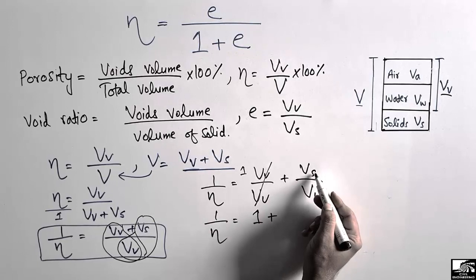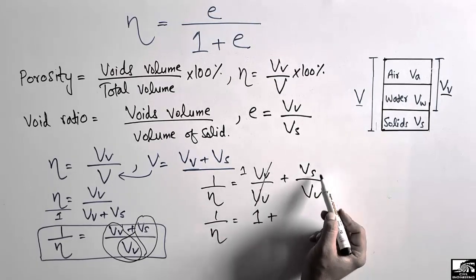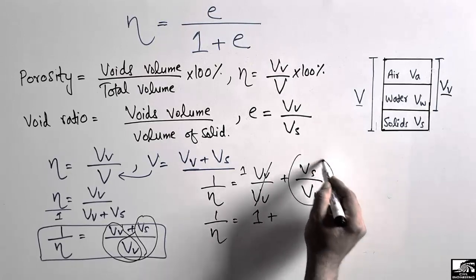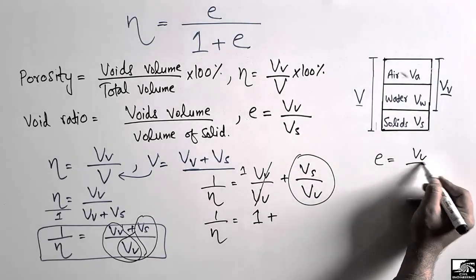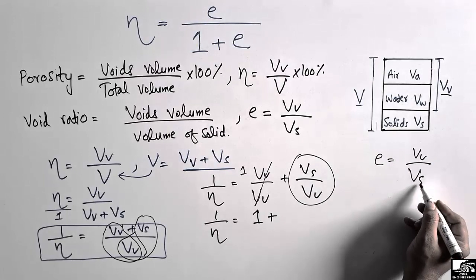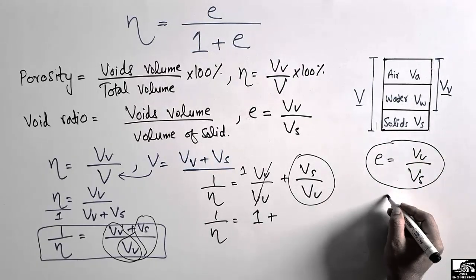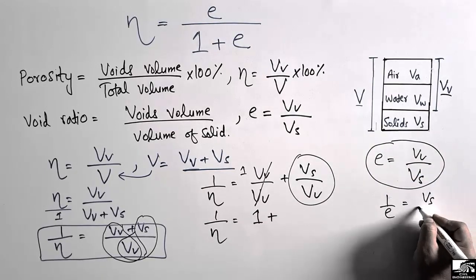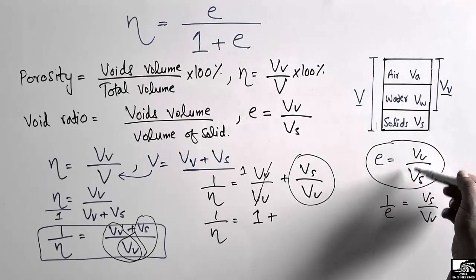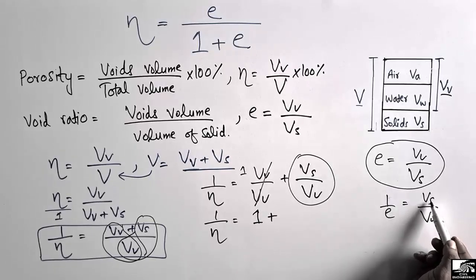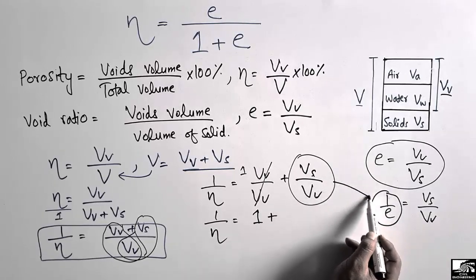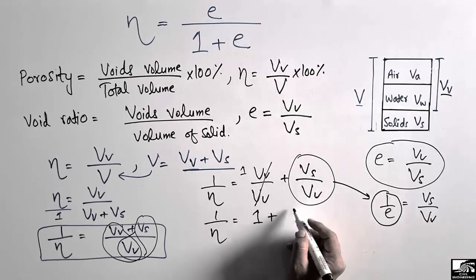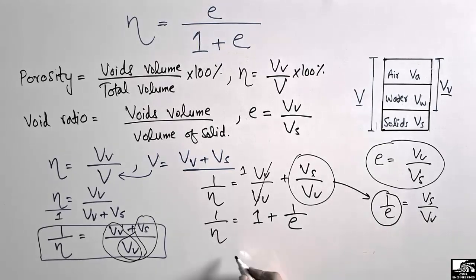Now, what is VS divided by VV? Looking at the definition of void ratio, e equals VV divided by VS. If we take the reciprocal of e, we get 1 over e equals VS divided by VV. So VS divided by VV is simply 1 over e. Substituting, 1 over n equals 1 plus 1 over e.